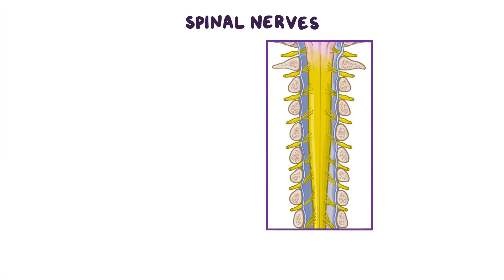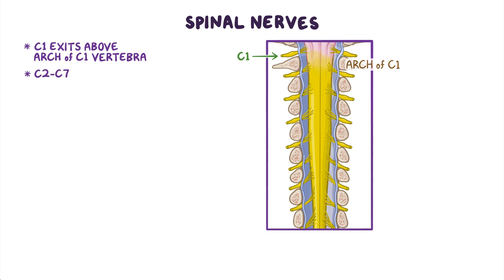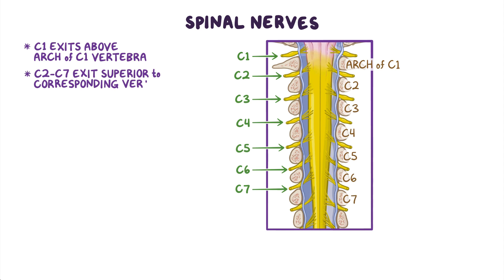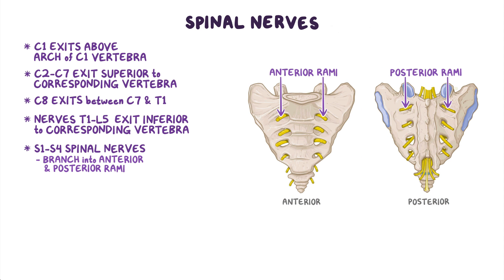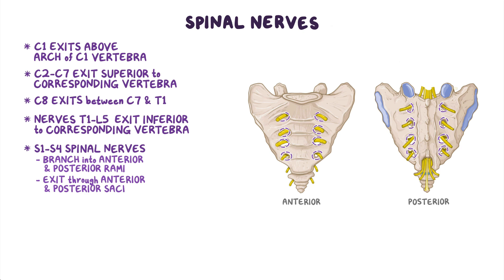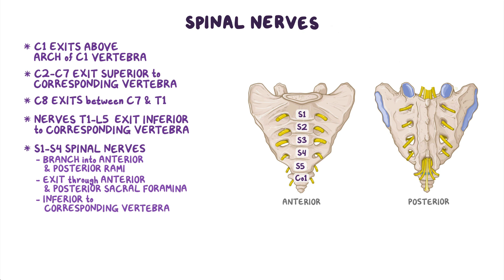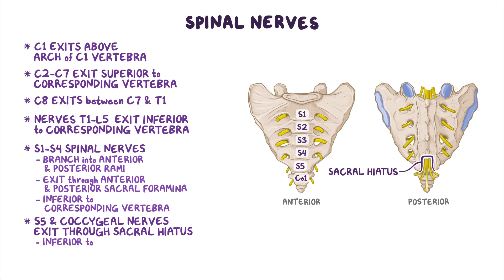Each pair of spinal nerves exits the vertebral column differently. The C1 spinal nerve exits above the arch of the C1 vertebra. Nerves C2 to C7 exit through the intervertebral foramina superior to their corresponding vertebra, while C8 exits through the intervertebral foramen between the C7 and T1 vertebrae. Nerves T1 to L5 exit through intervertebral foramina inferior to their corresponding vertebra. The S1 to S4 spinal nerves exit through the anterior and posterior sacral foramina, and the S5 and coccygeal nerves exit through the sacral hiatus.